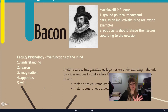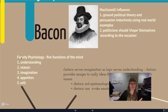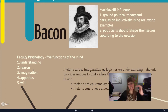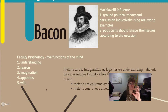These five functions of the mind are: understanding, reason, imagination, appetites, and wills. We divide this into where rhetoric exists and where logic exists. Our mind can operate in two different ways. Depending on the function our mind is engaged in, we're either making sense of language with logic or making sense of language and events with rhetoric — which involves the appetites and the wills. There's a clear separation between how we use the mind logically and how we use it rhetorically.